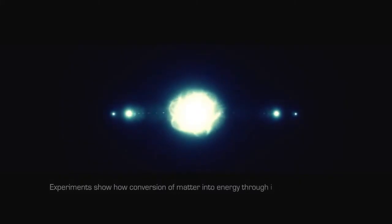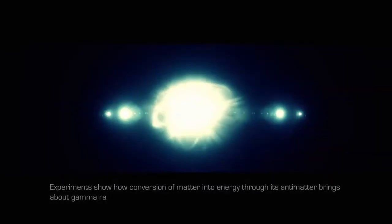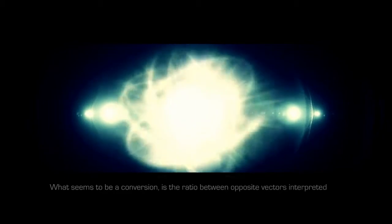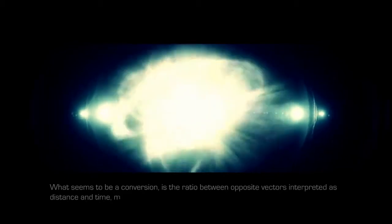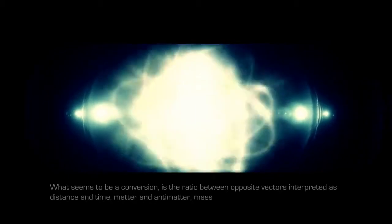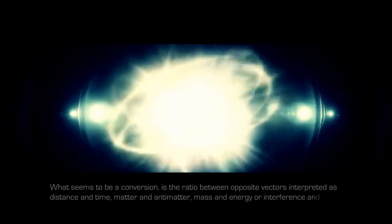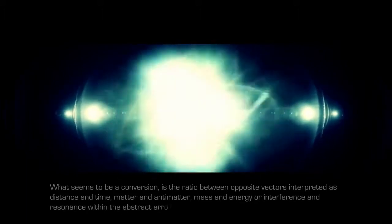Experiments show how conversion of matter into energy through its antimatter brings about gamma rays with exact opposite momentum. What seems to be a conversion is the ratio between opposite vectors interpreted as distance and time, matter and antimatter, mass and energy or interference and resonance within the abstract arrow of time of C.